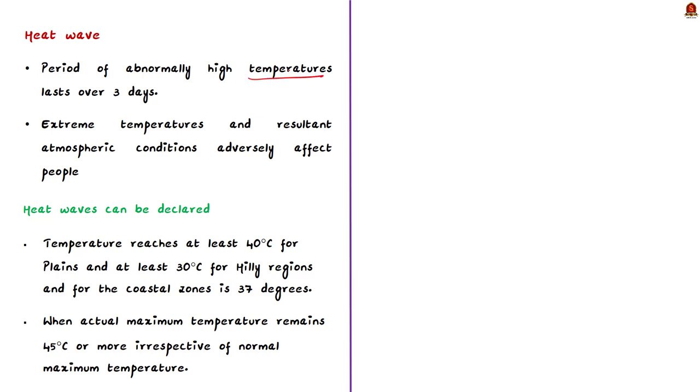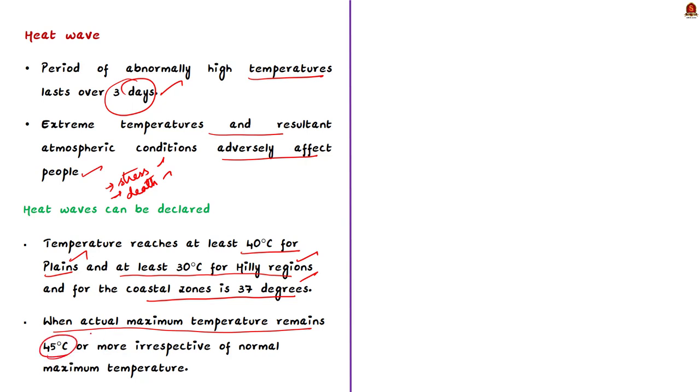First of all, what is a heat wave? A heat wave is a period of abnormally high temperatures which last over three days. The extreme temperatures adversely affect people as they cause physiological stress, sometimes resulting in death. According to Indian Meteorological Department, heat waves can be declared when the temperature of a station reaches at least 40 degrees Celsius for plains, at least 30 degrees Celsius for hilly regions, and the highest temperature criterion for the coastal zone is 37 degrees Celsius. Also, when actual maximum temperature remains 45 degrees Celsius or more, irrespective of the normal maximum temperature.